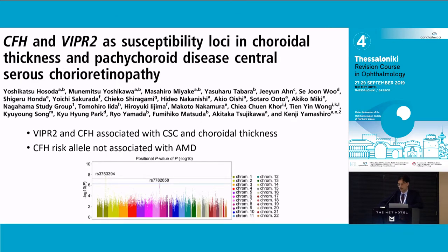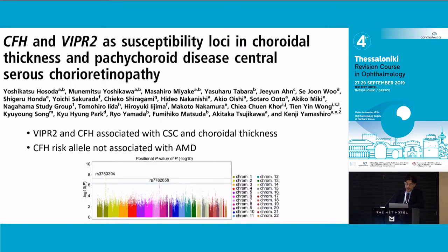They found that two genes were associated with choroidal thickness, and separately validated in another cohort with CSR and choroidal thickness. Interestingly, one of those genes is complement factor H - but not the allele that causes AMD. In fact, the allele that causes AMD is protective for CSR and vice versa. The odds ratio is not high - about 1.4 - whereas if you're homozygous for CFH for AMD it's about 3. So it's not a super strong effect, but it's in replication cohorts. There are familial CSR cases, but it's not as common as AMD.